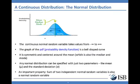First, normal distribution is a continuous distribution. You need only two things to completely specify a distribution: mean and variance. You cannot have two distributions with the same mean and variance. So the moment you specify the mean and variance, you specify the normal distribution.